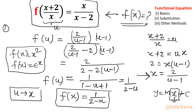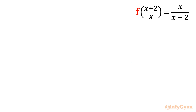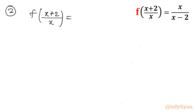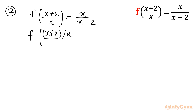Right now we are solving polynomial functions. Now let us find the second approach. Let me write that equation: f of x plus 2 over x equals x over x minus 2. Let me divide numerator and denominator by x — so it will become f of 1 plus 2 over x on the left side, equal to x over x minus 2 over x on the right side.